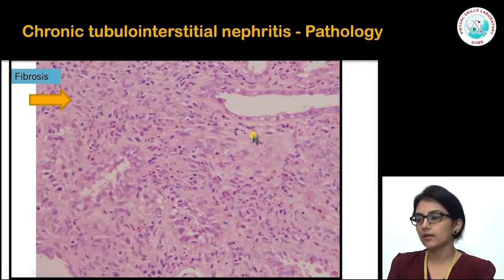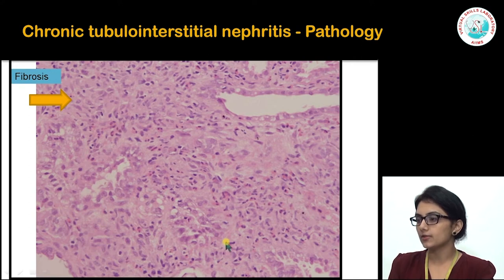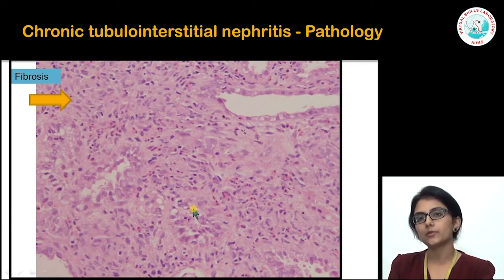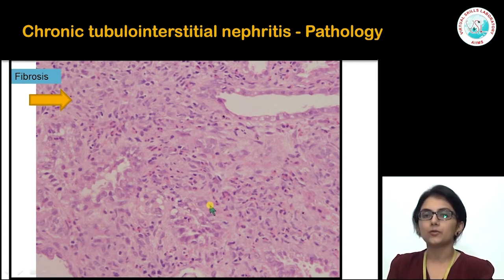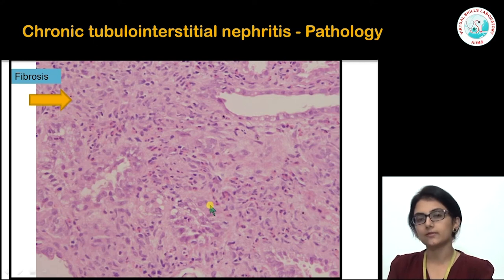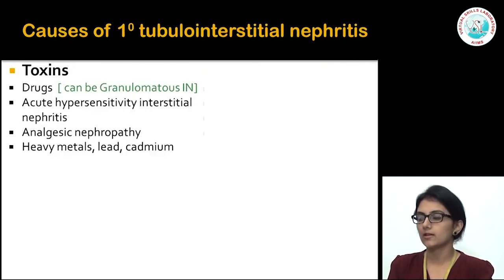In chronic TIN, you begin to see collagenization of the interstitium — pink collagenous material — with some residual inflammation and tubulitis still present. Fibrosis is the hallmark of chronic tubular interstitial nephritis. We've now looked at TIN as primary versus secondary, and acute versus chronic. Let's get into the important causes.